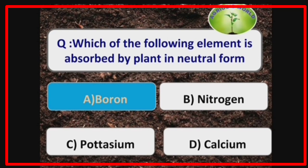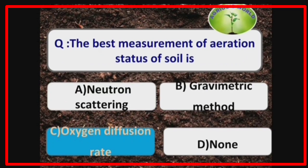The element which is absorbed by plants in neutral form is boron. The best measurement of the aeration status of soil is oxygen diffusion rate (ODR).